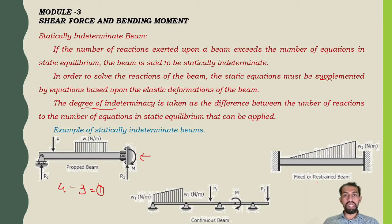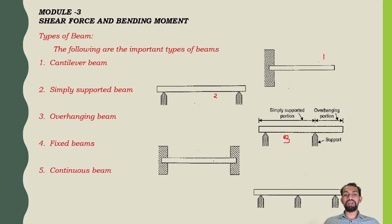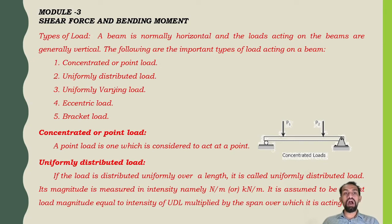Types of beams: first is the cantilever beam; second is the simply supported beam; third is the overhanging beam; fourth is the fixed beam, fixed at both ends; and fifth is the continuous beam.